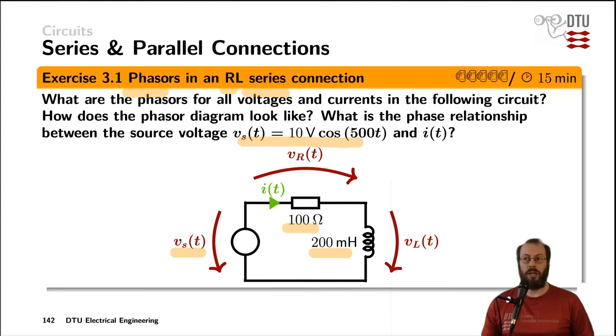The question is: how does a phasor diagram look for all the voltages - the given ones and the ones you need to calculate? That is the resistor voltage, the inductor voltage, and the current through the circuit. What is the phase relationship of the current and the source voltage?